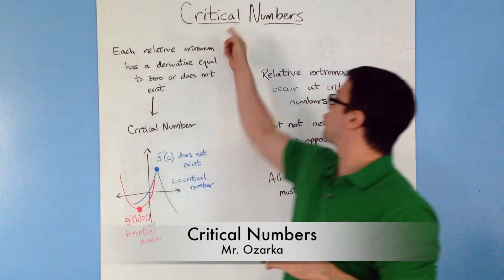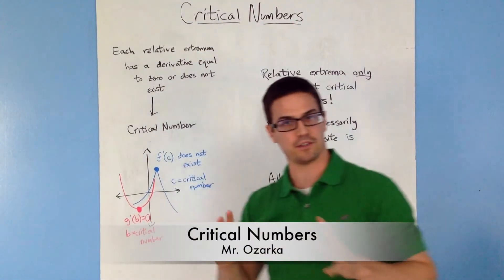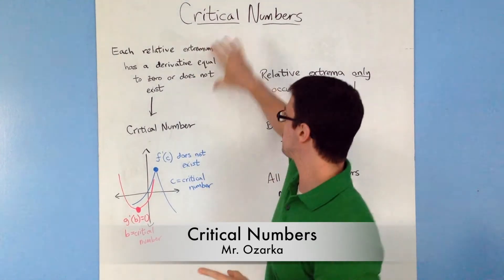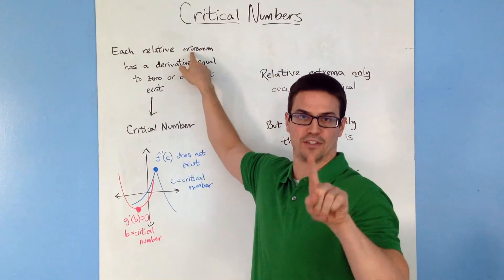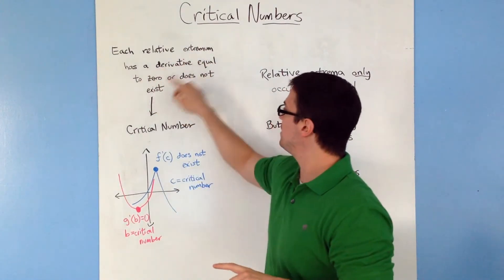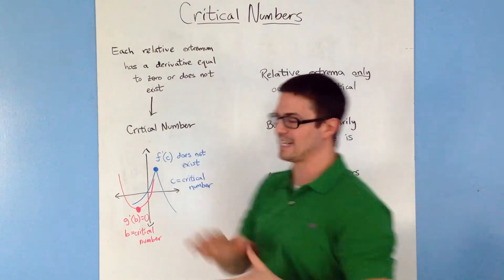Alright, so this is going to be a video about critical numbers. Now basically what a critical number is, is explained in this part right here. It says each relative extremum, which just means one extrema, has a derivative equal to zero or does not exist.